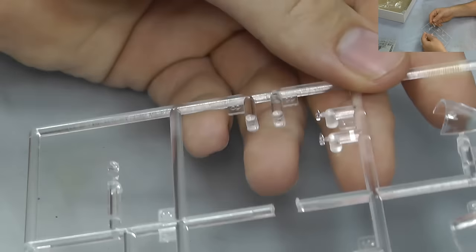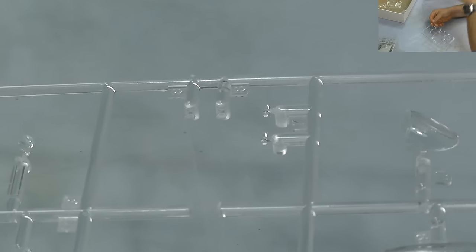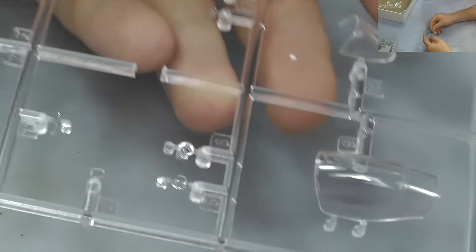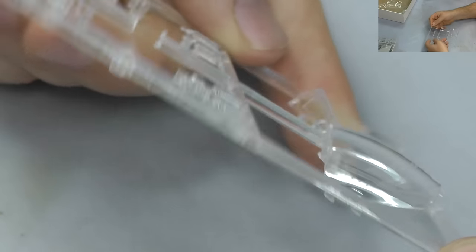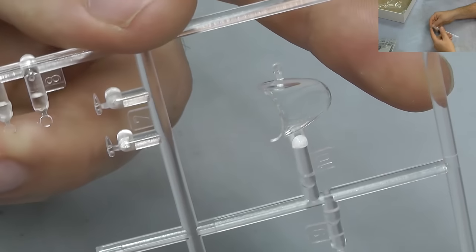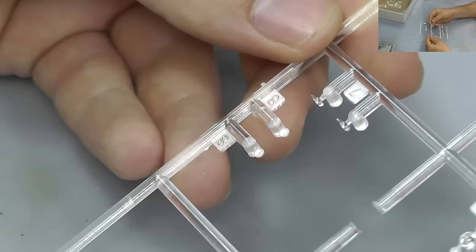Next as well, we've got our canopy section, which is what you expect from Hasegawa. Looking very shiny, crystal clear. We've got no cobweb effects or anything like that or any cracks or any problems. They're all looking good.